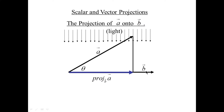It doesn't matter how long B is; B could be really short. The projection is onto the line of B. If B was pointed in the opposite direction, then this projection would be negative. There's a scalar projection and there's a vector projection. The scalar projection is the magnitude of the blue vector; the vector projection is the vector itself.